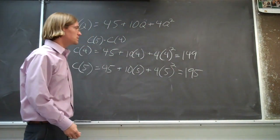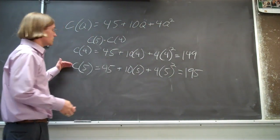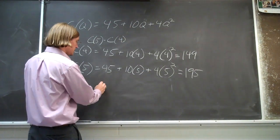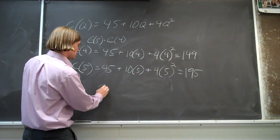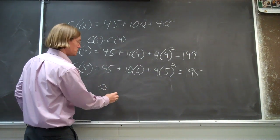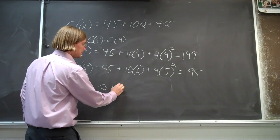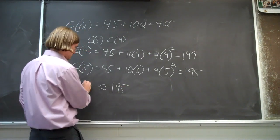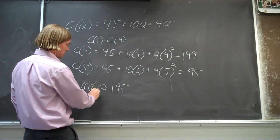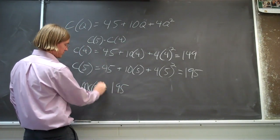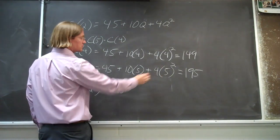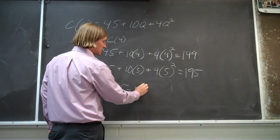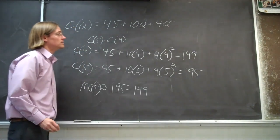So what's the marginal cost? What's the additional cost to produce this fifth unit? It should be about 195 minus 149.